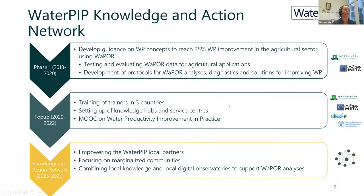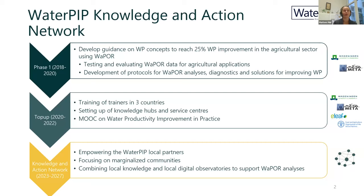We recently started a next phase of the project and we're really looking into extending our knowledge and experience from the first two phases. We started in 2018 with the first phase, where we were advised by the Dutch government to develop guidance on water productivity concepts and to support improving water productivity improvement in practice in the agricultural sector using the WaPOR database — a new data product based on remote sensing data. In the first phase we tested the WaPOR data and how we could utilize it for agricultural applications, developing protocols for WaPOR analysis, diagnostics, and a compendium for identifying solutions.